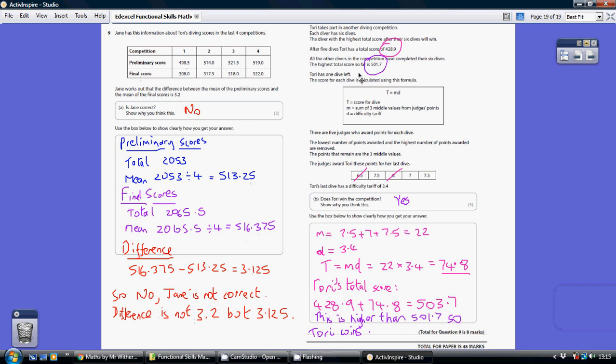So Tori's had five dives and has got this score. One more dive to go. Does she get enough points to beat this score here, which is the highest score so far? So how do we work out the points for a final dive?